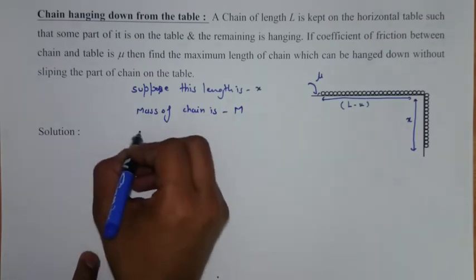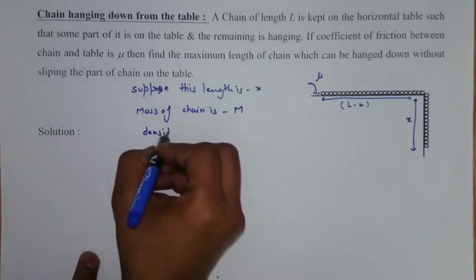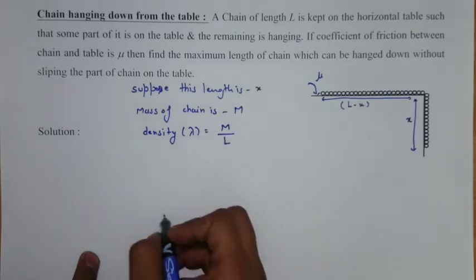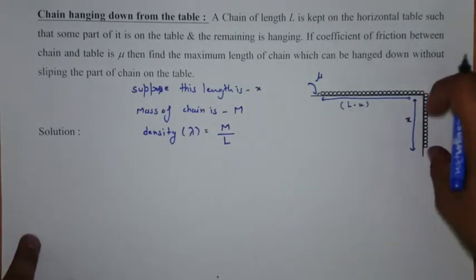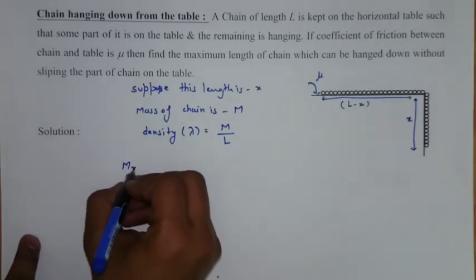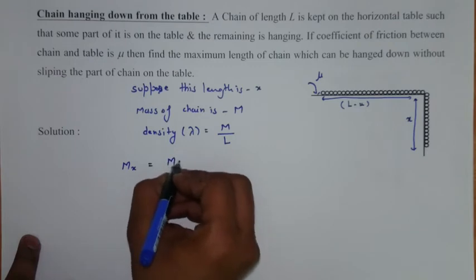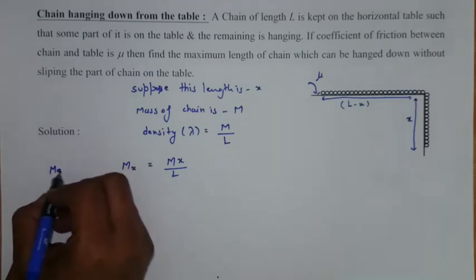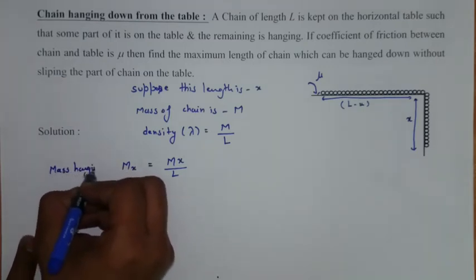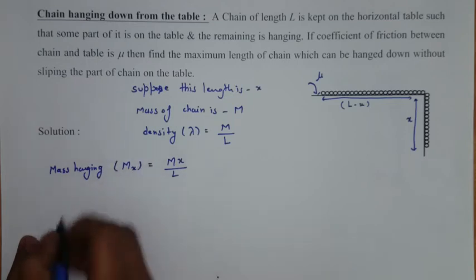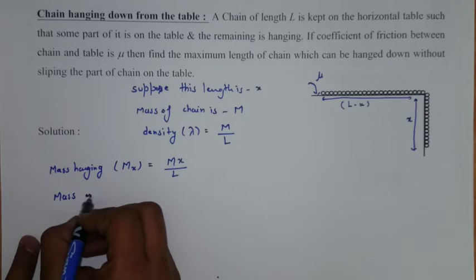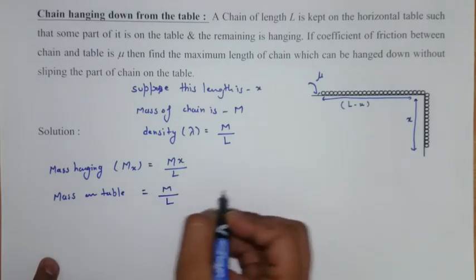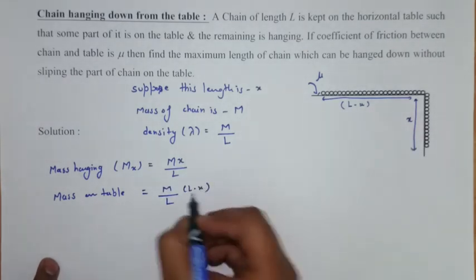Then linear mass density lambda would be mass per unit length, M by L. So mass of the chain hanging would be Mx upon L, this we write mass hanging. And mass on table, it would be length is L minus x.